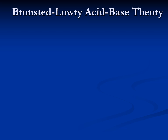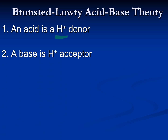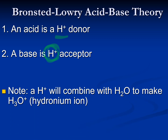Brønsted-Lowry acid-base theory fixed this problem. They stuck with the same idea of what an acid was — an acid is something that can donate a hydrogen ion, as Arrhenius said. But they changed the definition of a base: it's not the hydroxide that's doing it; a base is something that is able to accept hydrogen ions. As we saw with ammonia, it's able to take a hydrogen ion from water, leaving behind a hydroxide ion. So that's where the hydroxide is coming from — it's the accepting of the hydrogen ion that makes ammonia a base.